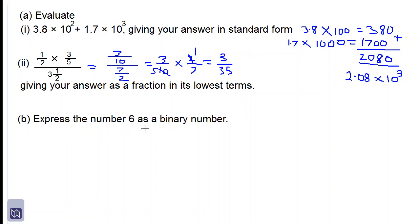Let's look at part B. Express the number 6 as a binary number. So binary number means base 2. We divide 6 by 2. 2 into 6 is 3. The remainder here is 0.